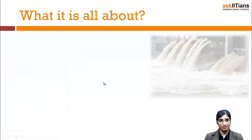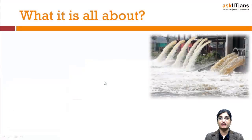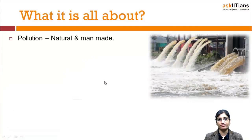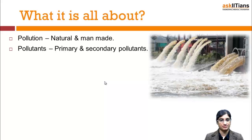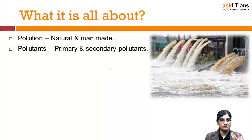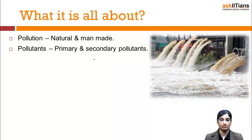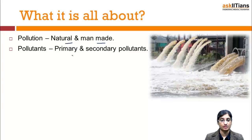In this chapter, we are going to learn about all the issues of the environment. The first and foremost issue is pollution — different kinds of pollution. Pollution can occur by natural reasons, which is natural pollution, or by man-made reasons, which is man-made pollution.